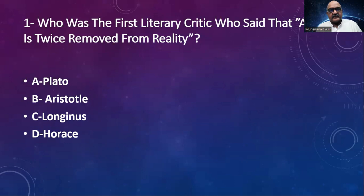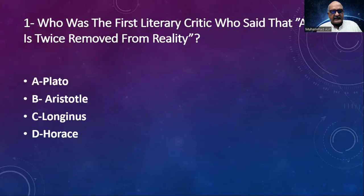First statement: Who was the first literary critic who said that art is twice removed from reality? The options are Plato, Aristotle, Longinus, and Horace. The correct answer is Plato. Plato was talking only about literal reality, especially the literal lies being told in literature by his contemporaries. He was not concerned with imaginative or creative literature.